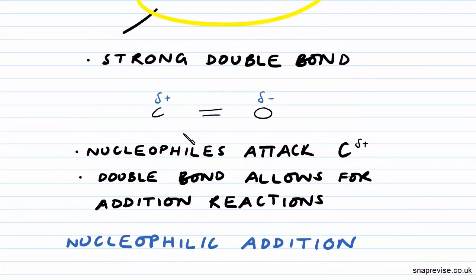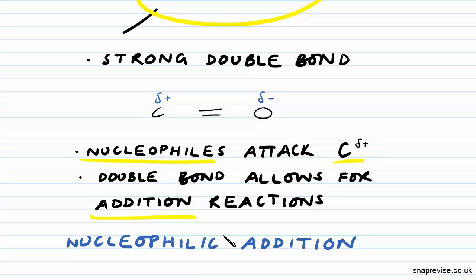Our carbon is ever so slightly positive, whereas our oxygen is ever so slightly negative. It's for that reason that nucleophiles attack the slightly positive carbon. The double bond allows for addition reactions to take place, and that's why we see nucleophilic addition reactions occurring with our carbonyl compounds.